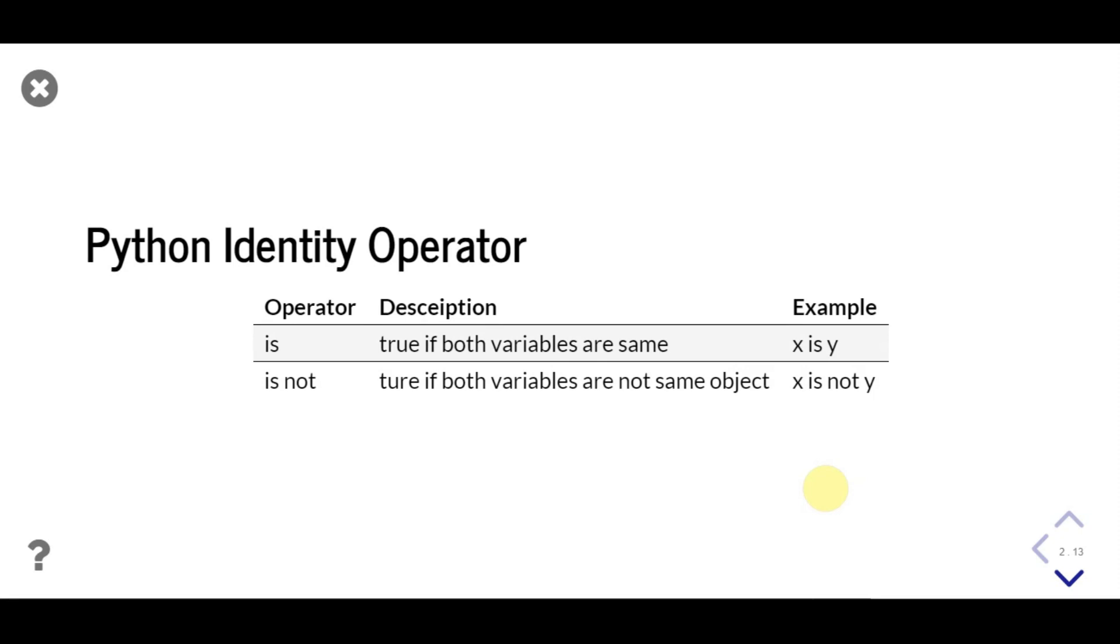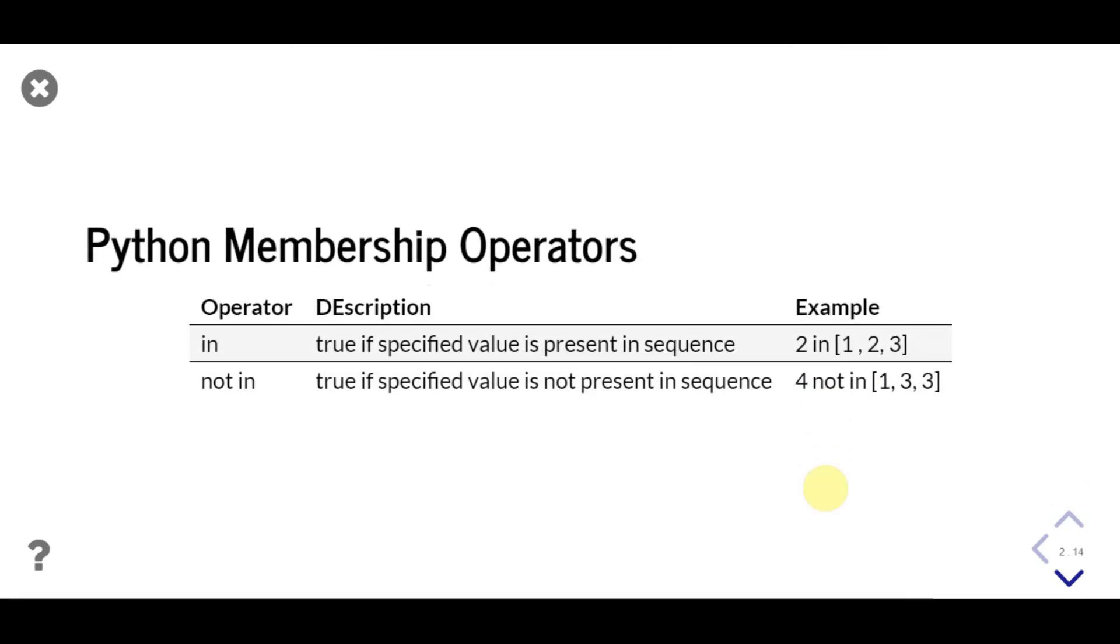These are some special operators. The 'is' operator returns true if both variables are same, or else false. The 'is not' operator will return true if both variables are not same, or else it will return false. These are really important.